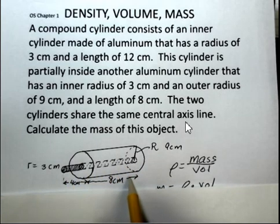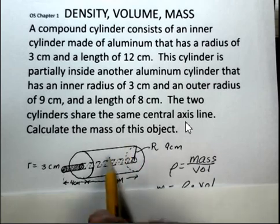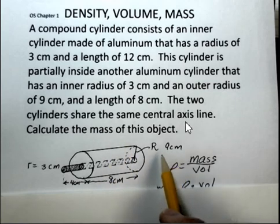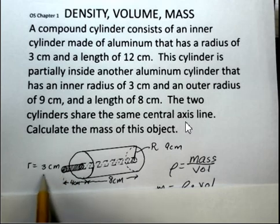8 centimeters of it is surrounded by the larger cylinder that has a radius of 9 centimeters. The smaller cylinder is 3 centimeters.